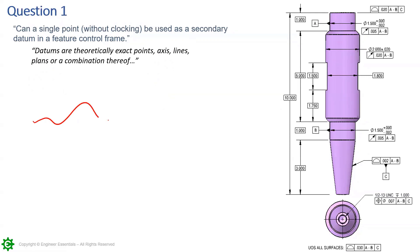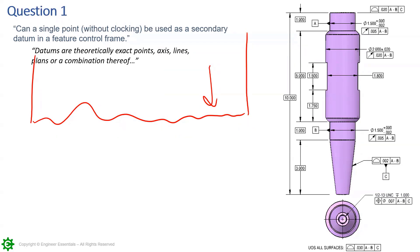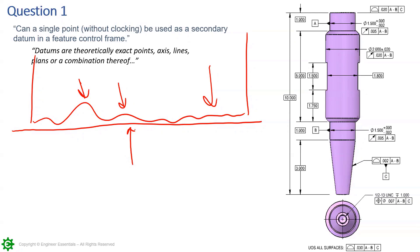If we have a surface that we're using, let's say that surface is on a microscopic level irregular — and we know almost every surface, nothing's perfect in the real world, there's going to be some irregularities. The datum is a perfectly flat plane. So the datum feature is that irregular surface, while the datum is the perfect plane that represents that surface, using those high points to create a perfect plane.